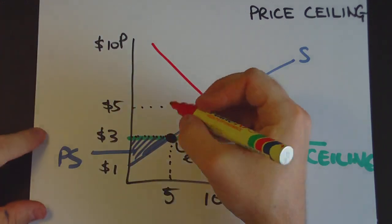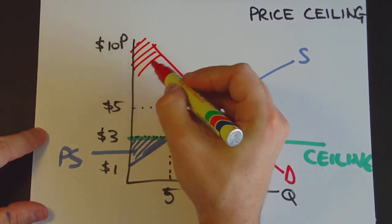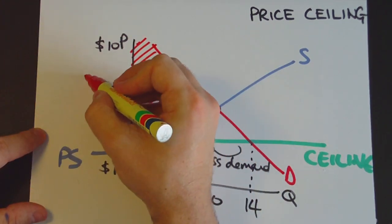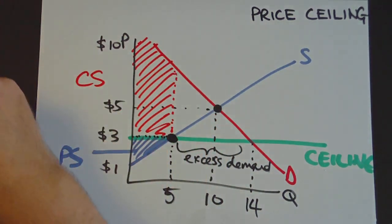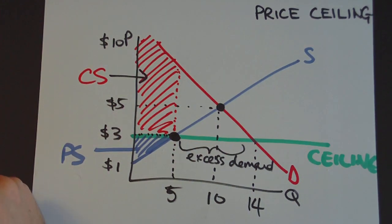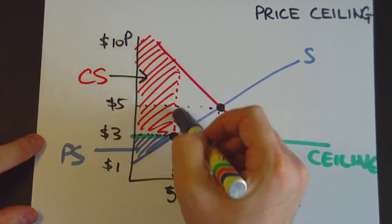To work out the consumer surplus, you go up until you hit the demand curve, and then it's the area below the demand curve to that horizontal line that we drew. So that's the consumer surplus there. It looks like consumers are pretty happy - there's a big area of consumer surplus here.